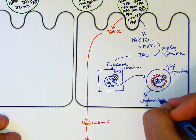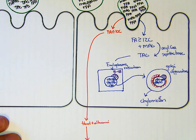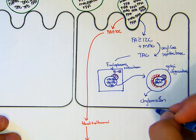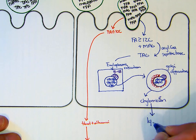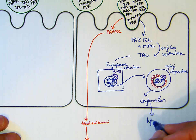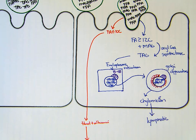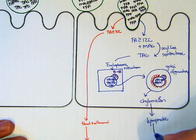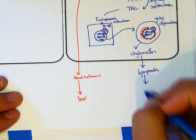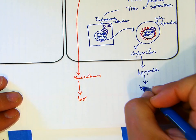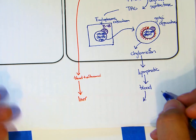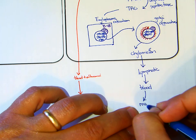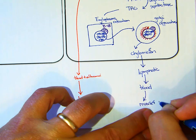The chylomicron is going to go to the lymphatic. It does not enter the blood, does not go to the liver directly, but enters the lymphatic where it's stored for a while, 30 minutes to 3 hours to peak. From the lymphatic, we go to the blood. From the blood, we go to the muscle and adipose.